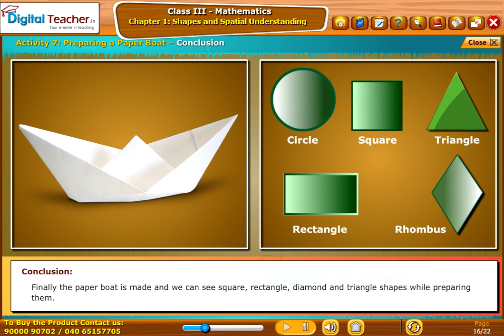Finally, the paper boat is made and we can see square, rectangle, diamond and triangle shapes while preparing them.